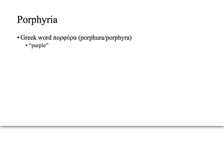Porphyria comes from the Greek word porphyra, and the word means purple. The reason is because people with porphyria tend to have discoloration in the urine or in the feces, or in both, and that can be shades of red all the way up to purple. We're going to discuss exactly why that is going into the organic chemistry of it.